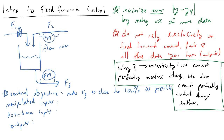What I've drawn to the left here is a diagram in which we have a stream F1 with a valve on it, and we have some disturbance input F2 — an inlet stream with a variable flow rate that we have no control over but we can measure. Our goal is to make sure that we make some outlet stream F3 as close to 10 cubic meters per second as possible. Our manipulated input is stream F1 because we have a valve on it.